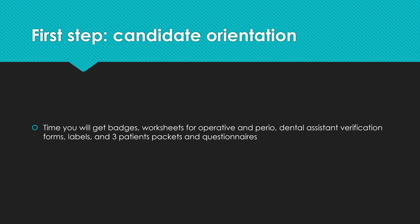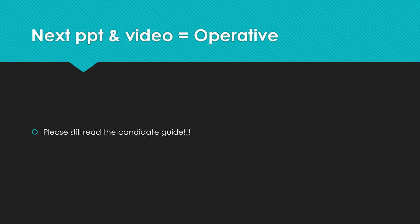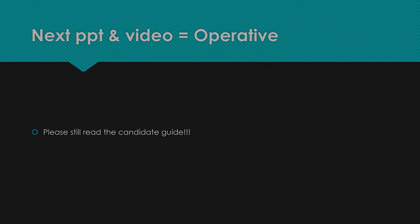The first step is candidate orientation on Friday, where you bring your IDs and receive your badges, operative and perio worksheets, dental assistant verification form, labels, and three patient packets and questionnaires. Our next video will cover the operative section from the REBS candidate guide. We highly recommend reading the candidate guide thoroughly so you're prepared.